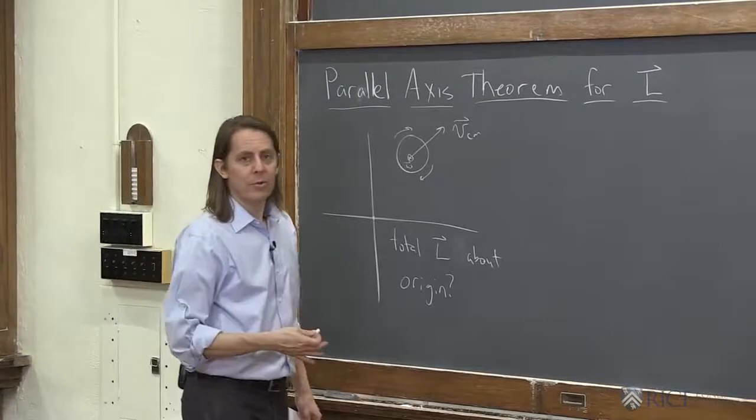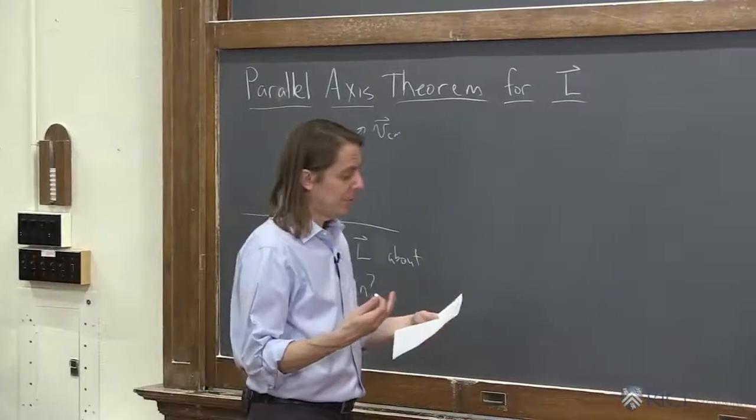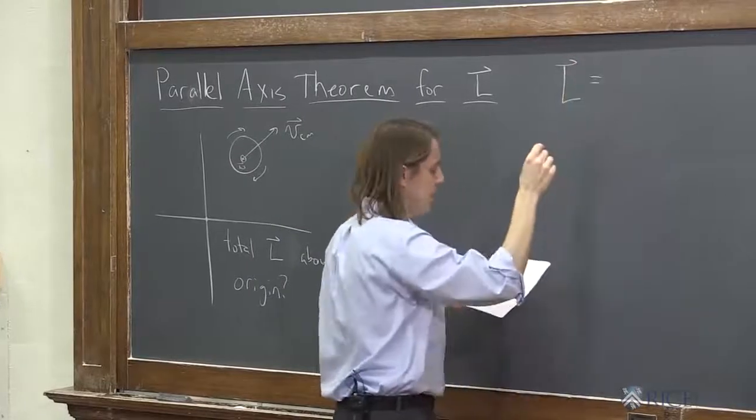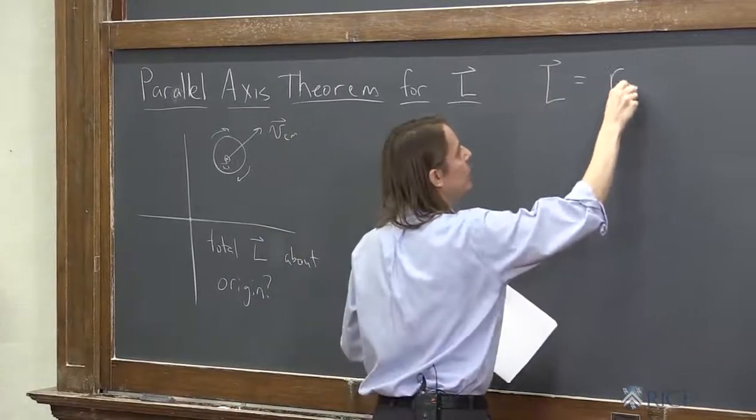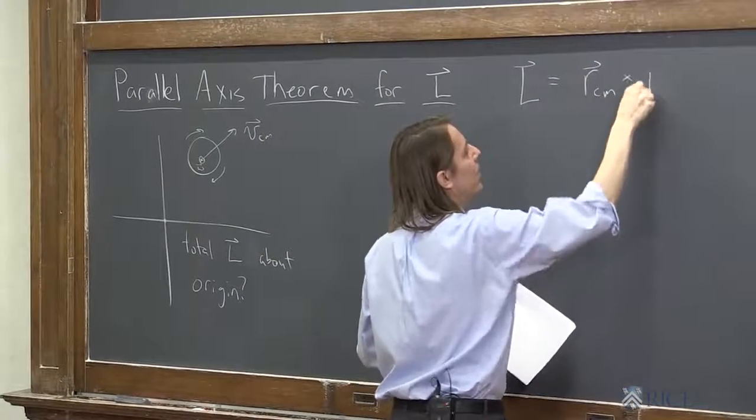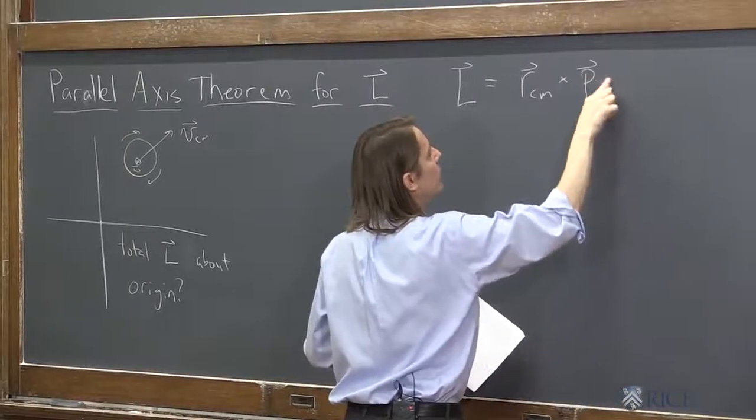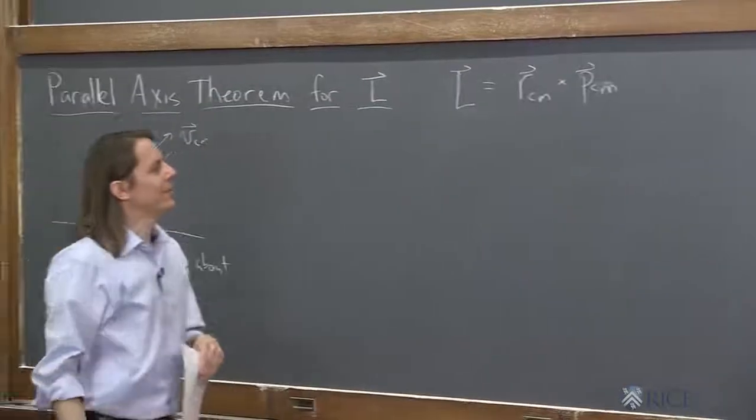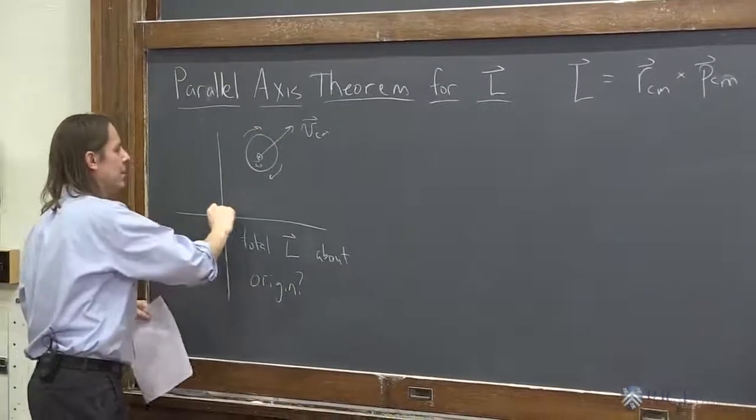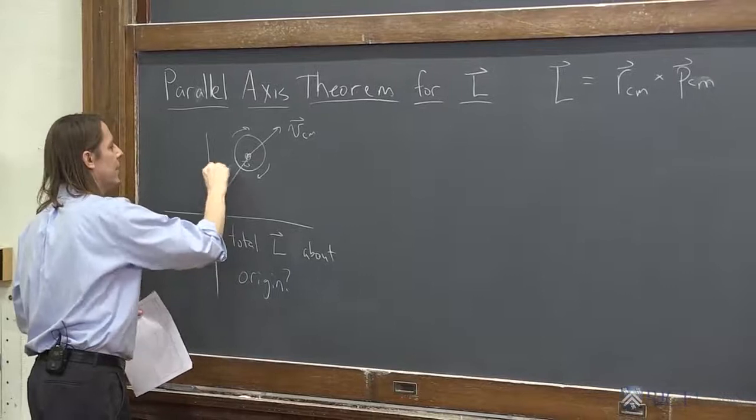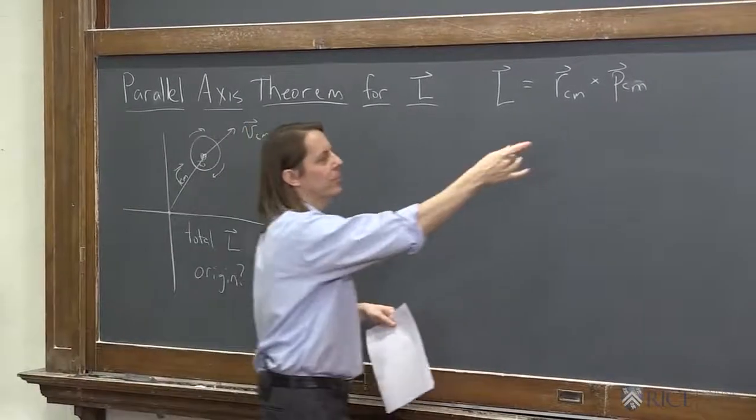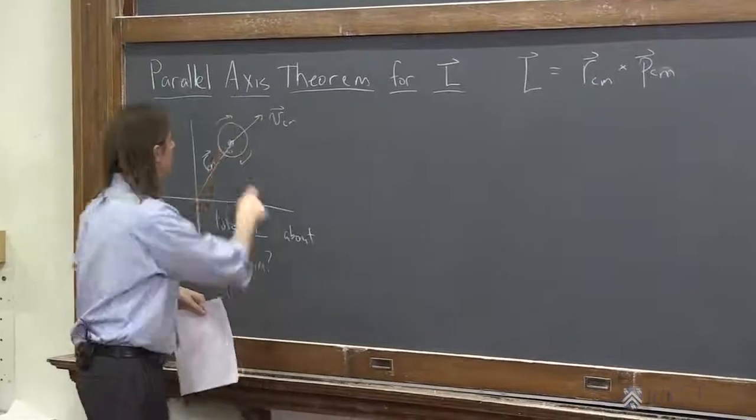So what this says is very similar to the parallel axis theorem for the moment of inertia, is that the total you can get by adding two terms. One has to do with the center of mass velocity, so the cross product of the position vector from the origin to the object, like that, RCM, and the momentum vector, which of course is just mass times the VCM.